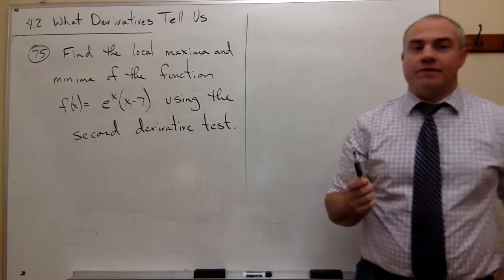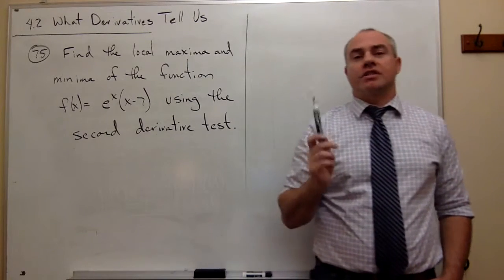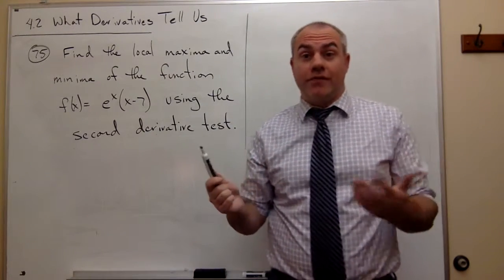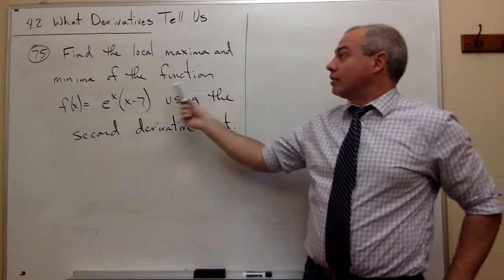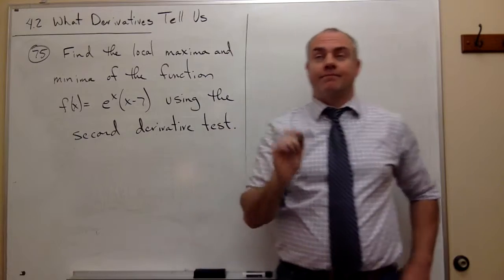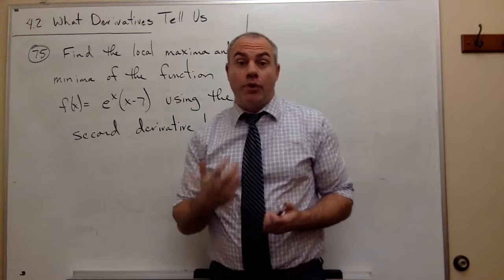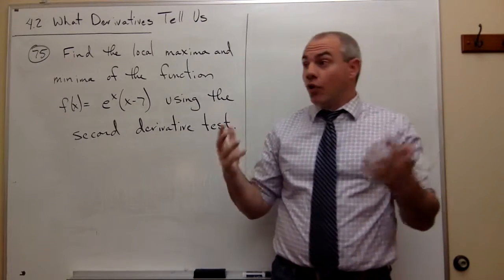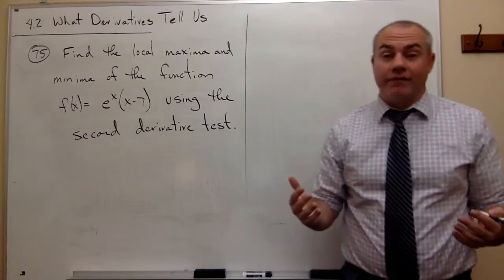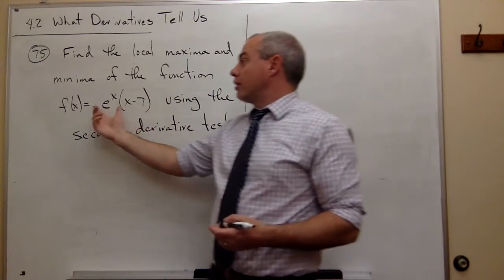We've used the first derivative test in past problems, but in this problem I want to use the second derivative test, and that one works just slightly different. In the second derivative test, we're still trying to find where the local maxima and the local minima of the function are, but we go about it in just a slightly different way. We're going to first identify the critical points of the function in the normal way — you take the first derivative, set it equal to zero, solve for x, or find where it's undefined, and you get your critical points.